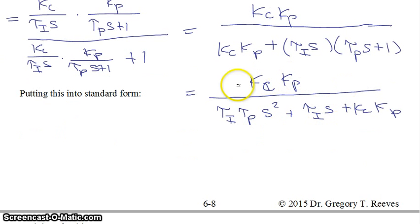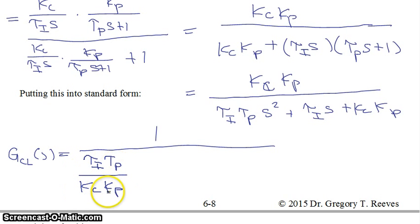So if we put this transfer function now into standard form, and to do that we make sure that this term here, this constant term in the denominator, is equal to 1. So we are going to both multiply the numerator by 1 over kc times kp and the denominator by 1 over kc times kp. Then what we get is our transfer function closed loop as a function of s in standard form is equal to—now we have just 1 in the numerator—1 over tau i tau p divided by kc kp times s squared plus tau i over kc kp times s plus 1. So there's our standard form.